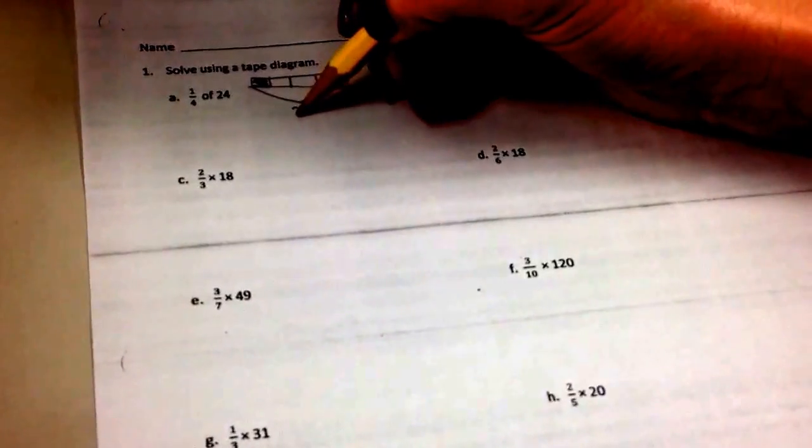So here, you're going to draw the picture of one-fourth. So you have a bar split into four pieces, and you have one of them. And it's one-fourth of 24, so the whole is 24.